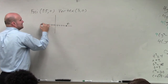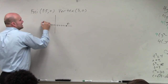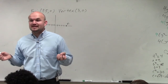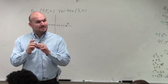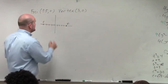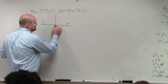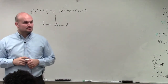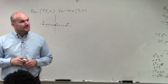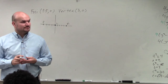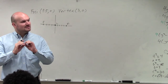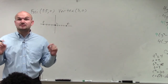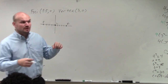One thing I know when given the two foci is that my center is directly in the middle of my two foci. So now I can find my center. That's true for an ellipse and a hyperbola — your center is always in between your two foci. It's always in between your two vertices and always in between your two co-vertices.